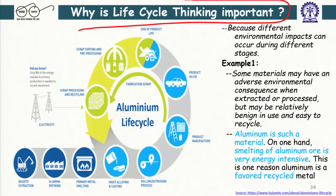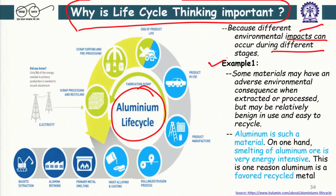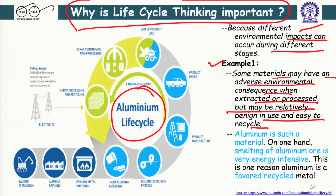Why is life cycle thinking and circular economy thinking important? Let us look at the example of aluminum. Different environmental impacts can occur at different stages. Aluminum is a material that may have an adverse environmental consequence when extracted or processed, but is relatively benign in use and easy to recycle. Melting of aluminum ore is very energy intensive, which is one reason aluminum is a favored recycled material. Aluminum cans get picked up and recycled very readily — it is one of the top most recyclable materials.